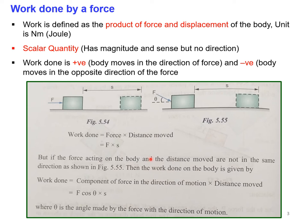Work done can be taken as either positive or negative. If the body moves in the direction of the force, work done is positive. If the body moves in the opposite direction of the force, work done is negative. Work is a scalar quantity — it has magnitude and sense, but no direction.